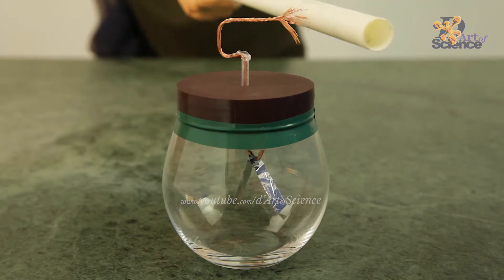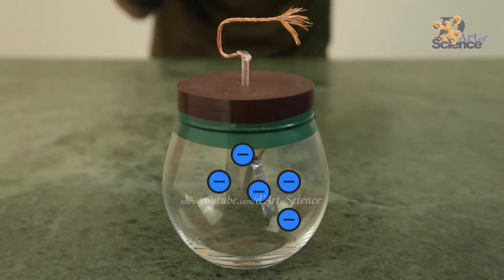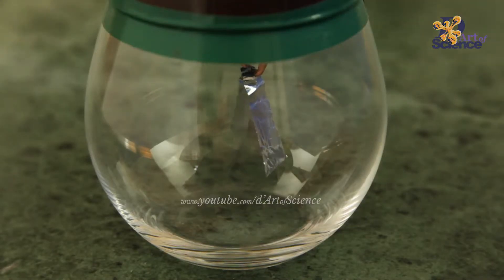You can try it again and again and it happens every time. The two aluminum leaves get the same negative charge of the PVC pipe and since now both have the same charge, they start repelling each other and you can see that happen.